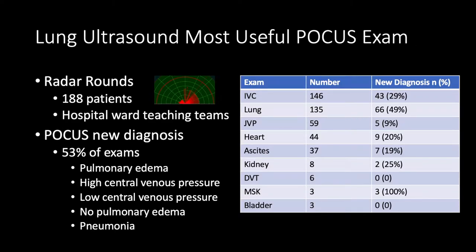I'm excited you're joining us for lung ultrasound today because I really feel it's the most useful POCUS exam to learn for hospital medicine. When I look back at my first hundred and eighty patients I scanned on radar rounds — I consulted on hospital ward teaching teams and found patients where ultrasound could potentially change their diagnosis — 53% of the time we found something new that the primary teams didn't suspect. And if you look at the most common misdiagnoses, several are pulmonary related, including pulmonary edema, dry lung, or missed pneumonias. When I go back and look at which point-of-care ultrasound exam changed diagnosis most frequently, 49% of the time lung ultrasound added new information the primary team was not aware of.